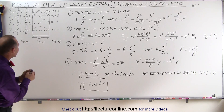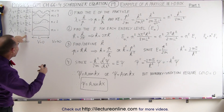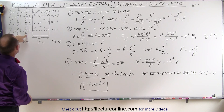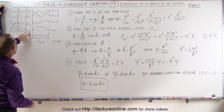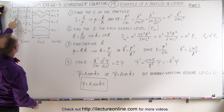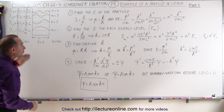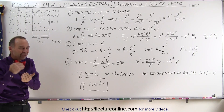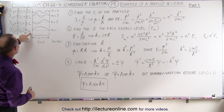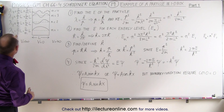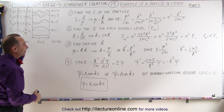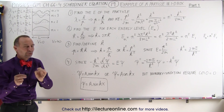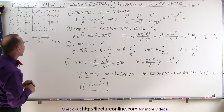If you express it in terms of the quantum number n indicating the energy levels, notice that in each case the wavelength is always equal to 2 over n times L. So we always get the same expression for the wavelength for a particle inside a one-dimensional box.